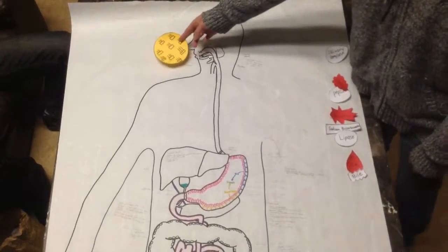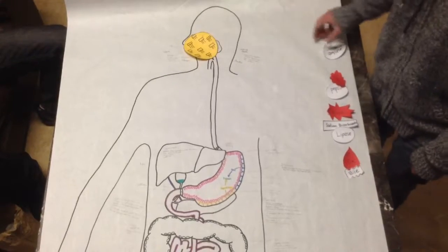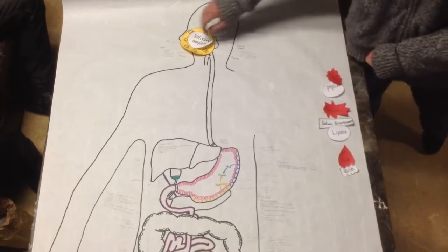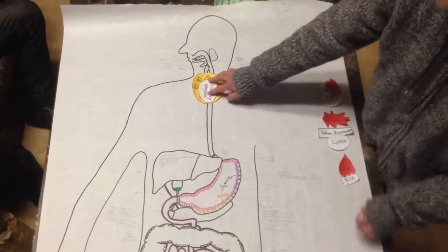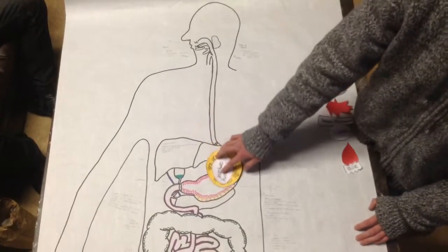So here we have our butter ball. Our butter ball, we stick it in our mouth and our salivary glands release salivary amylase. Our salivary amylase will lubricate the throat and allow peristalsis to carry it down to the stomach.